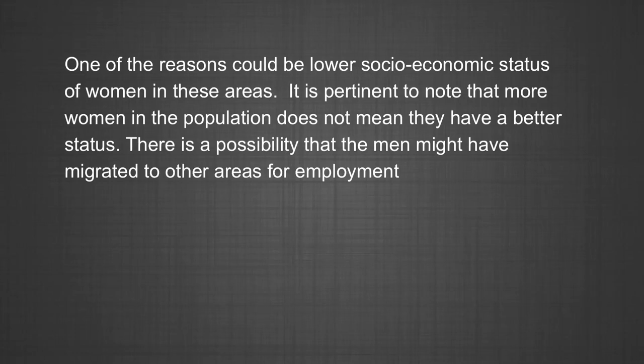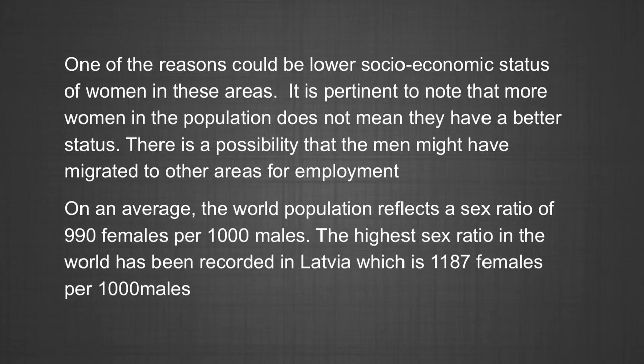One of the reasons could be lower socioeconomic status of women in these areas. It is pertinent to note that more women in the population does not mean that they have a better status — there is a possibility that the men might have migrated to other areas. On average, the world population reflects a sex ratio of 990 females per 1000 males. The highest sex ratio has been recorded in Latvia at 1187 females per 1000 males. The lowest sex ratio is found in the United Arab Emirates at 468 females per 1000 males. The sex ratio is favourable for females in 139 countries and unfavourable in the remaining 72 countries listed by the United Nations.